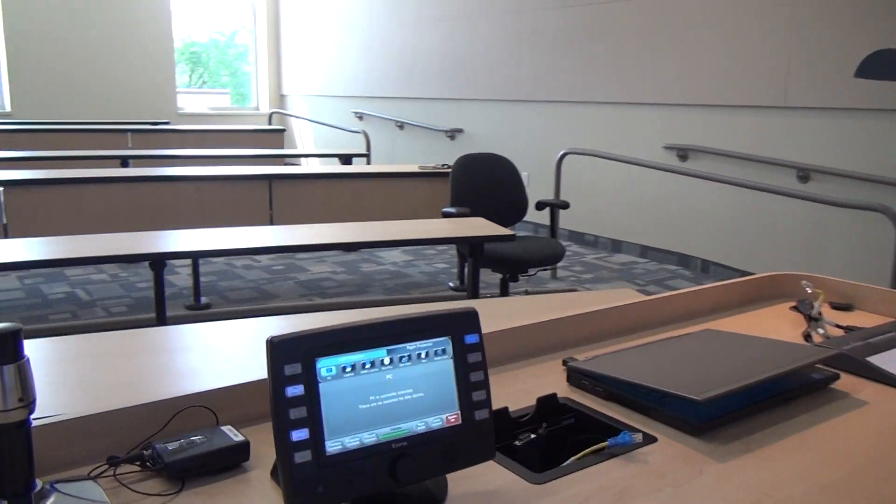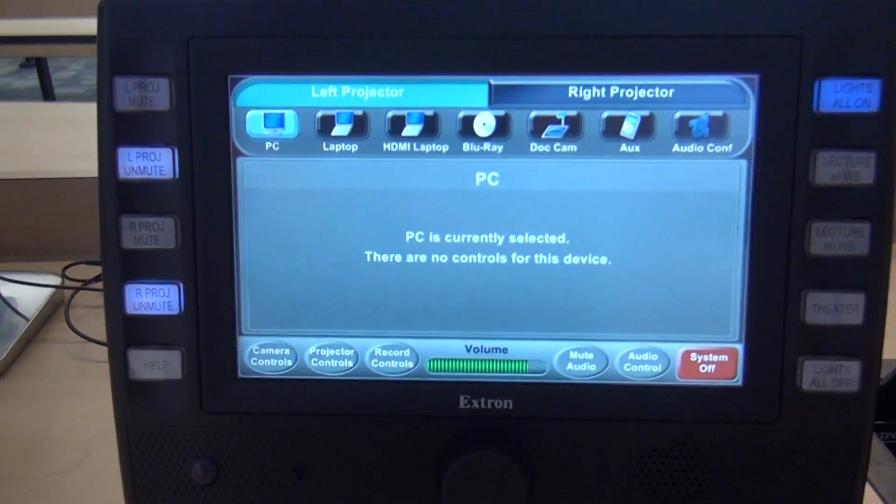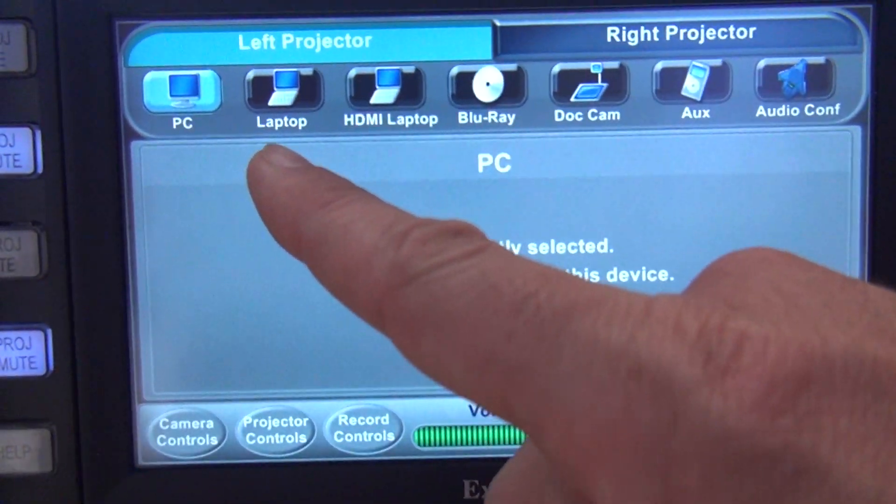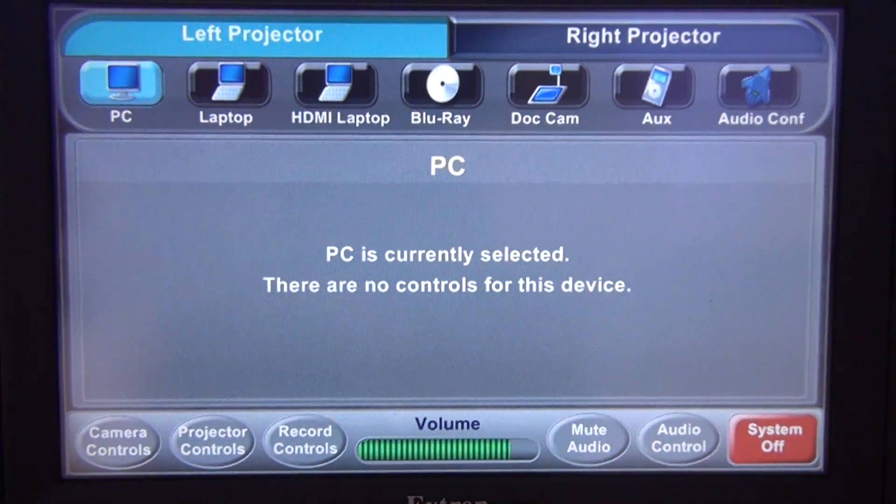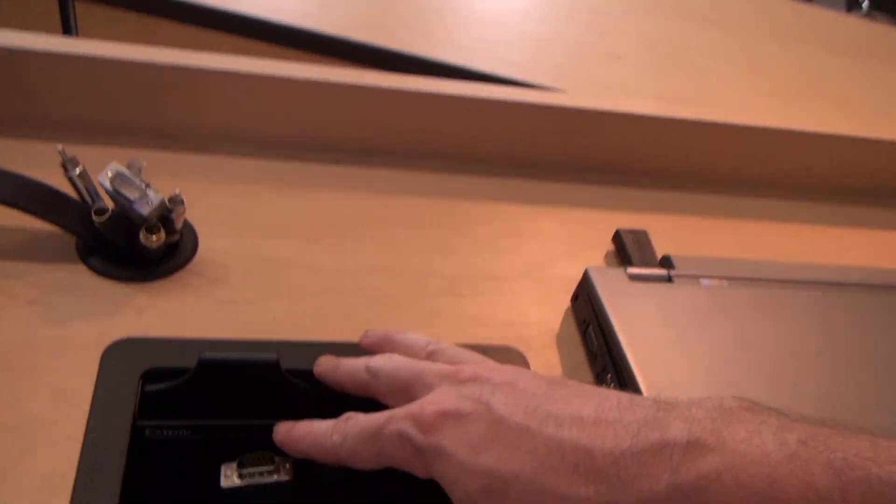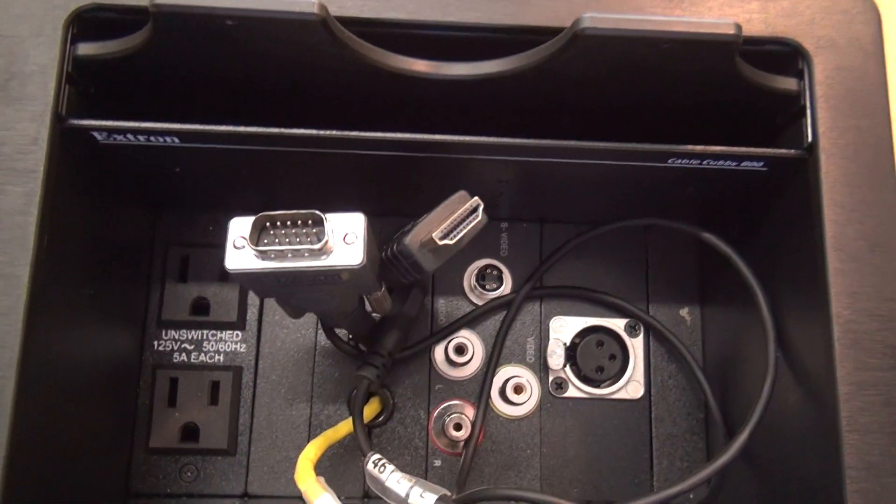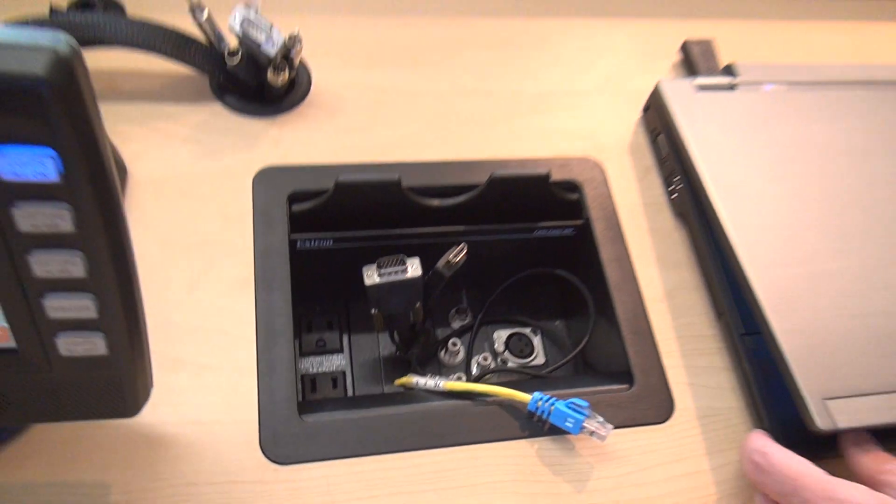The next couple of things on our source select row here are our laptop options. We have a VGA laptop and we have a digital laptop or an HDMI connection. All those cables are located in the cable cubby here. There's even a power supply down there so you can plug in. You don't have to rely on your battery.